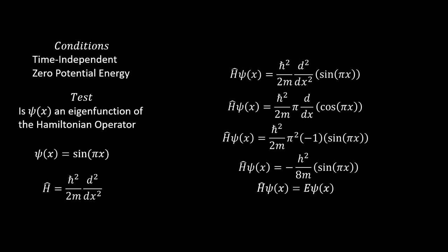Bringing the constant out and taking the next derivative, that obtains π times negative 1 times π times sin(πx).